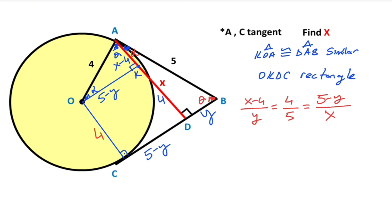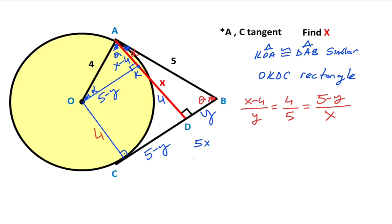Using the left-hand side of the equation, we get 5x minus 20 equals 4y. Therefore: 5x minus 4y equals 20.